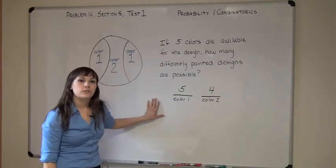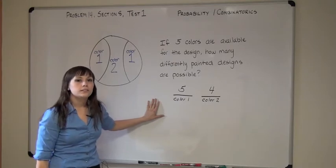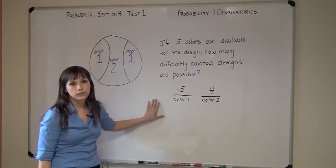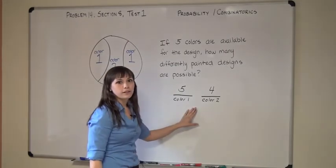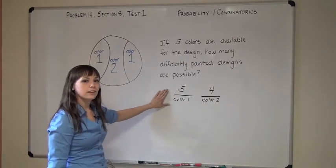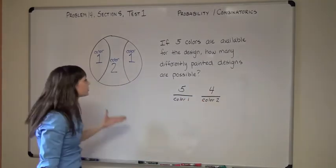Now the last thing to ask yourself when you're doing a combinatorics problem is: is this a permutation or a combination, or in other words, does order matter? Order does matter, because if you put red in this slot versus in this slot, it will change your final product.